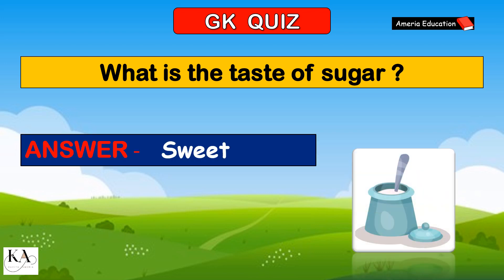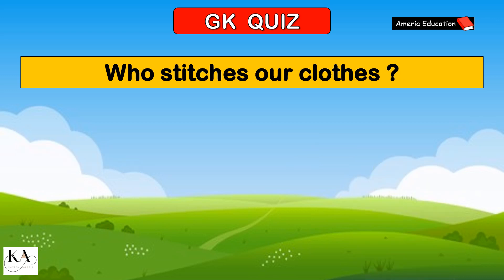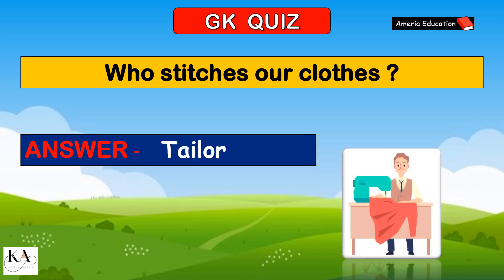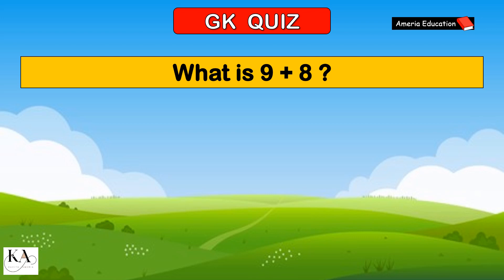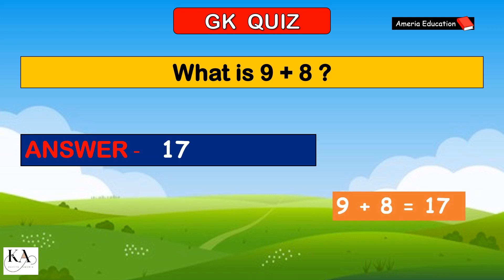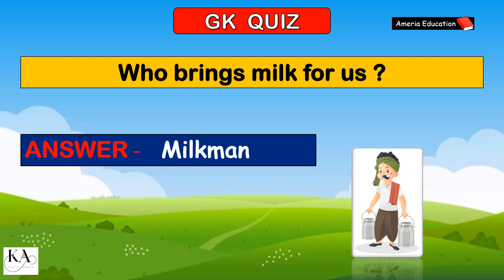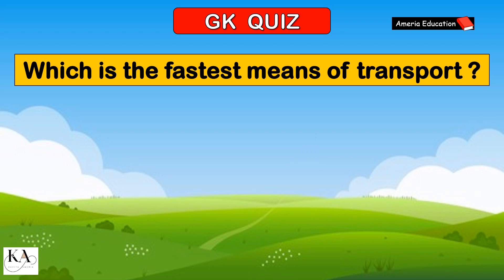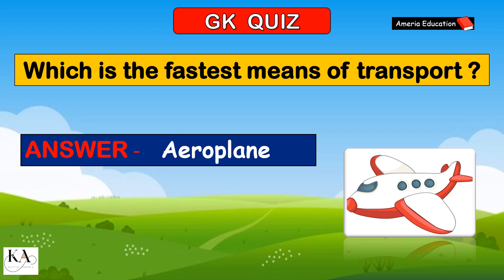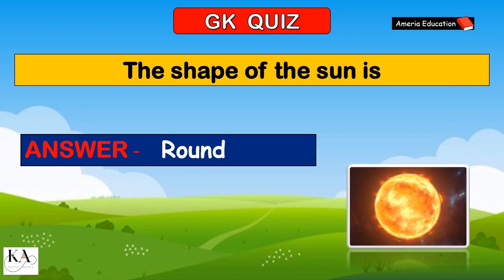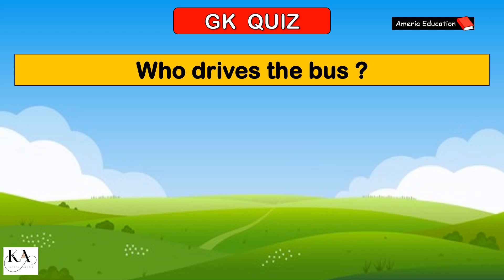What is the taste of sugar? Sweet. Who stitches our clothes? Tailor. What is 9 plus 8? 17. Who brings milk for us? Milkman. Which is the fastest means of transport? Aeroplane. The shape of the sun is round. Who drives the bus?